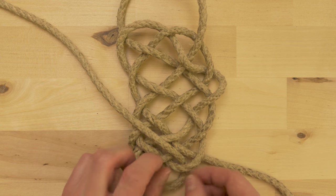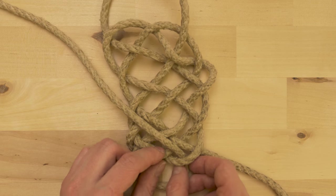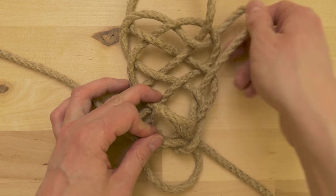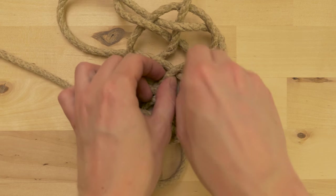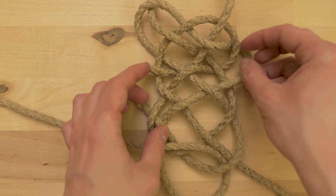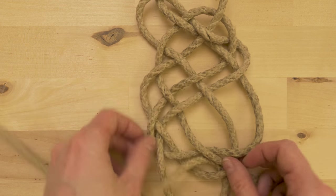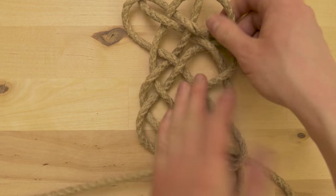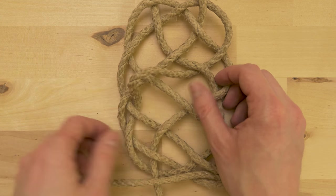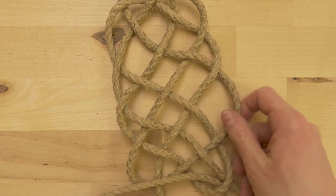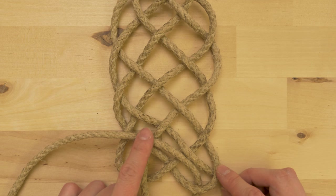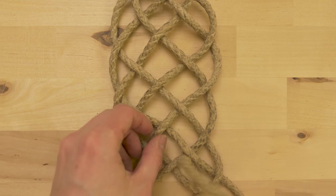So I recommend that you grab one of the ends and work in some slack into the mat. Once you are happy with the shape of your mat, you can start doubling it. Take one of the ends and simply follow your other end.